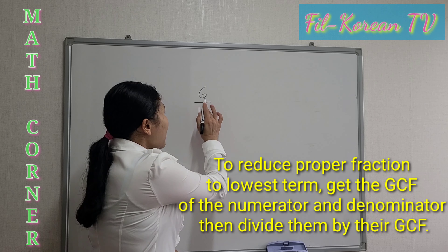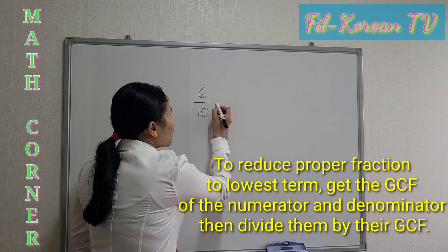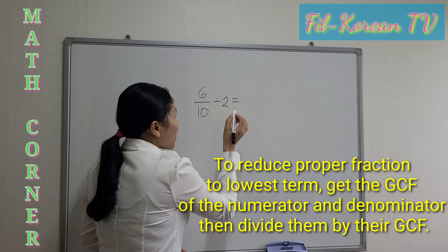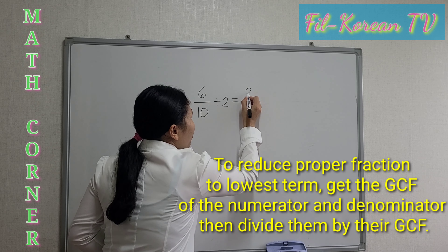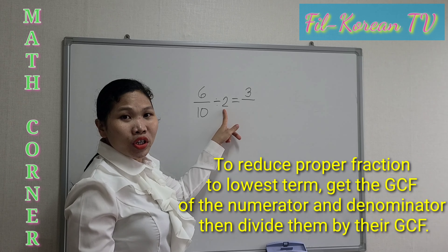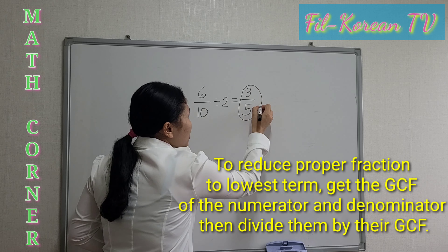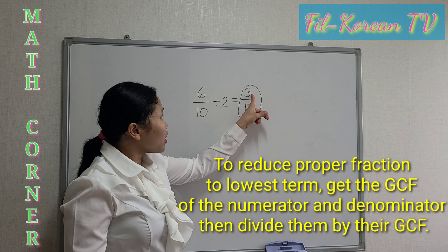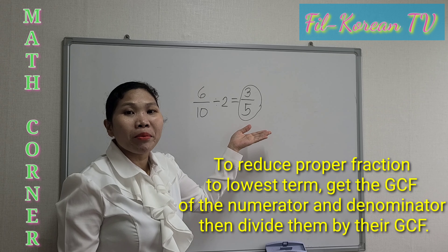Now let us answer. The GCF of 6 and 10 is 2, so we will just divide by 2. 6 divided by 2 equals 3, and 10 divided by 2 equals 5. Therefore, the answer is 3 fifths. In lowest terms, you can see that the numerator and the denominator are both prime numbers.